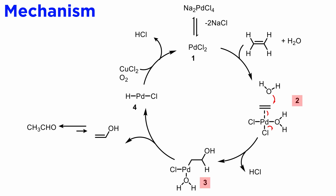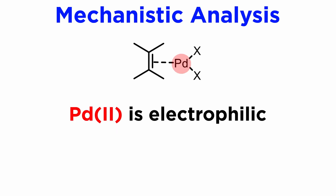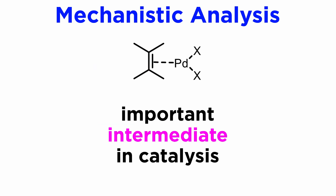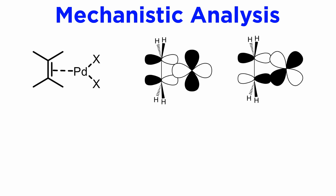The step leading from 2 to 3 deserves special attention, because we have not encountered it previously. We have mentioned that palladium-2 is very electrophilic, and coordination with olefins makes olefins also electrophilic. This is unusual because simple olefins are nucleophilic, and react with electrophiles like bromine or Brønsted-Lowry acids. Olefin-palladium-2 complexes are important intermediates in catalysis, and their electrophilicity is a consequence of the bonding pattern illustrated here.